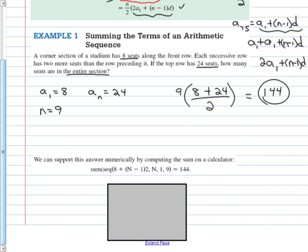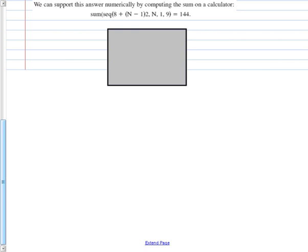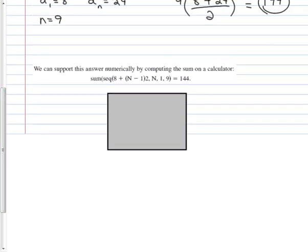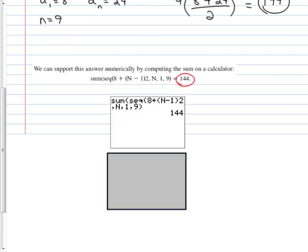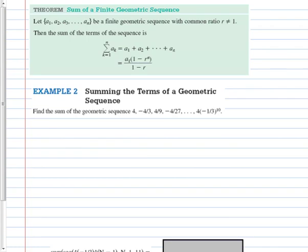We can support it numerically. We saw how we could enter sequences in our calculator. We can find sums of sequences. Here is the formula. Where does that come from? This is a sub 1, 8, plus n minus 1 times the common difference, 2. And n is our variable. We're starting with row 1, and we're ending with row 9. And that happens to be 144. Sometime you can play around and enter it in, and sure enough.